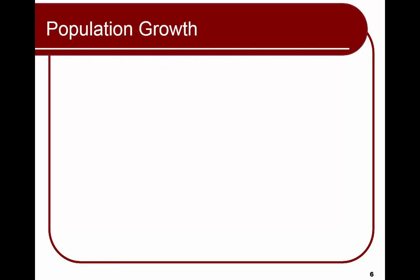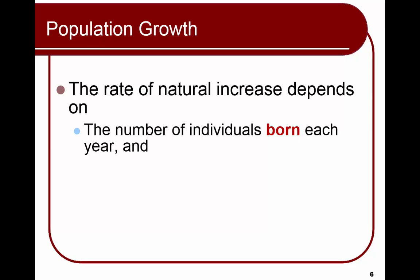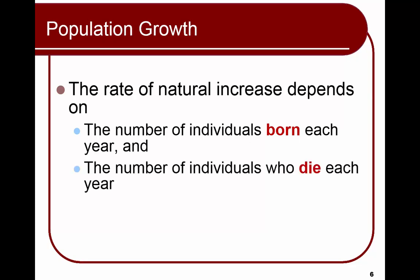How do populations grow? The rate of natural increase, or growth rate, depends on the number of individuals born each year and the number that die each year. This assumes that immigration — people moving in — and emigration — people moving out — are equal. Populations grow if the number born exceeds the number that die.